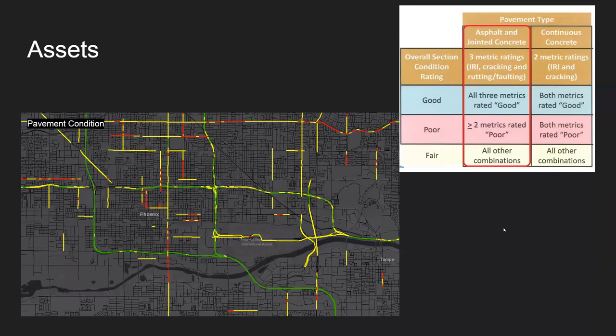Pavement is probably one of the more important assets, and we continuously measure and assess its condition. It's collected with something called a profiler, and based on the data collected, we assign a good, fair, or poor rating — basically a composite score of three different data items. You can see items like IRI, the International Roughness Index, as well as cracking and rutting, which are grooves that continuous traffic impresses into the pavement. None of those things are good. We measure that, map it out, and can see where problem areas are.